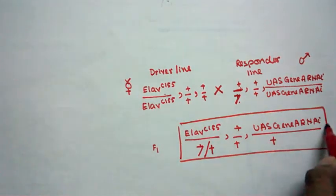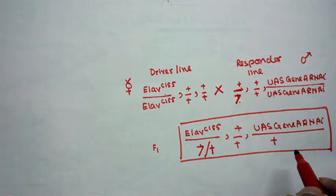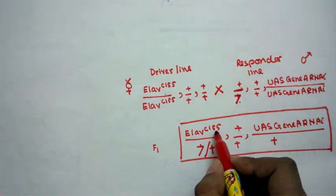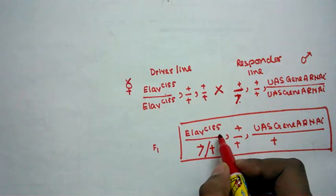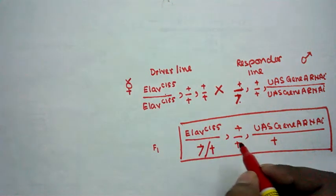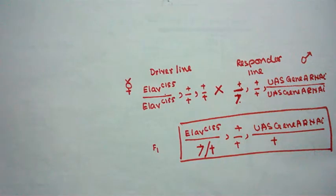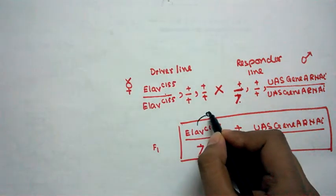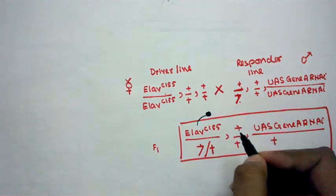So what is said, in this F1 male, the knockdown happened. So what actually happened? Here we have ELAV-C155 in one particular chromosome. So this ELAV-C155 actually would produce the GAL4, the GAL4 transcription factor.